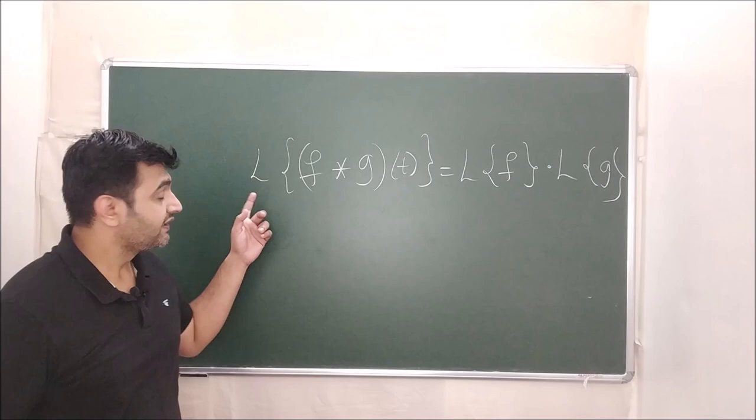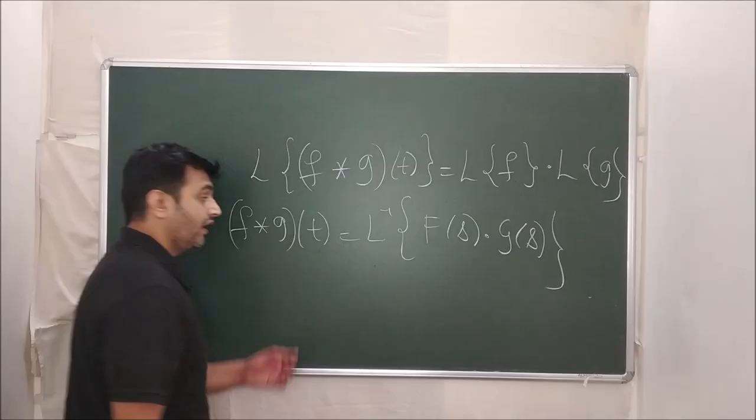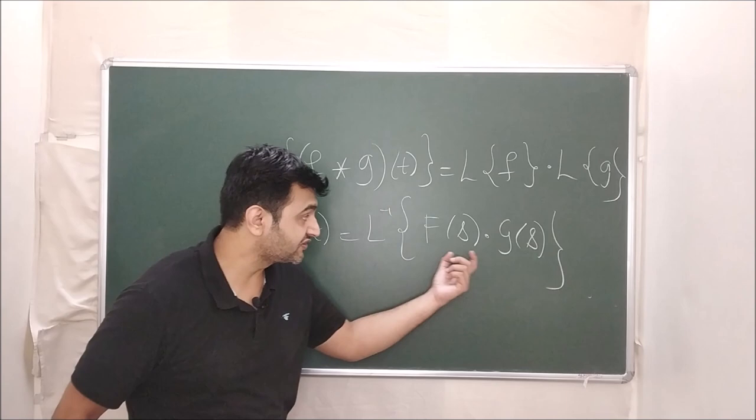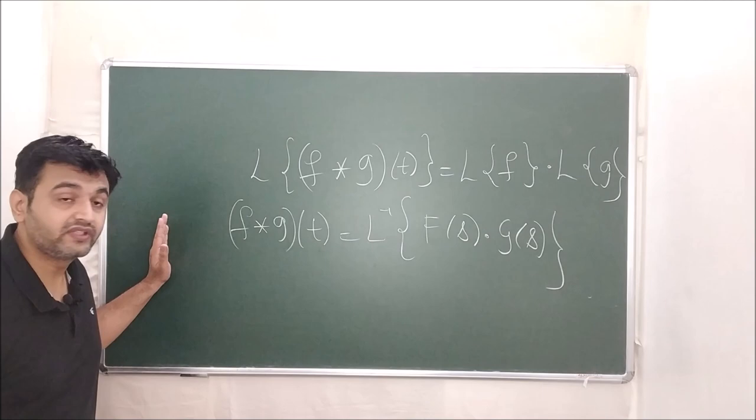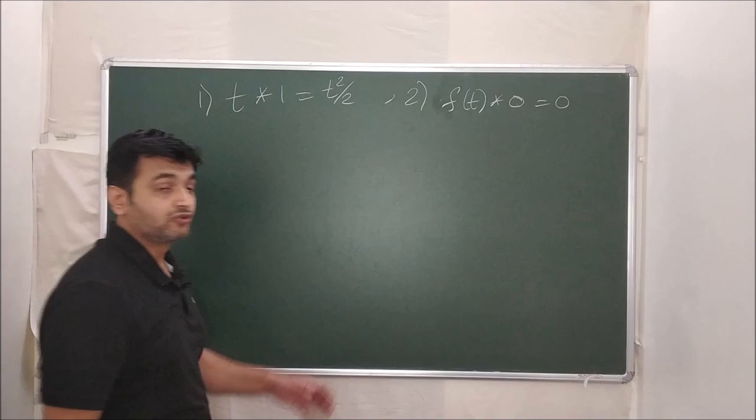Now comes a very important theorem in Laplace transforms: the Laplace of f★g is nothing but the product of their Laplace's. Equivalently, the inverse Laplace of L(f)·L(g) is f★g(t). So: L{f★g} = L{f}·L{g}, and L⁻¹{L(f)·L(g)} = (f★g)(t). Let's now look at some examples.